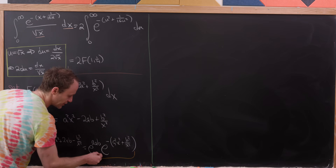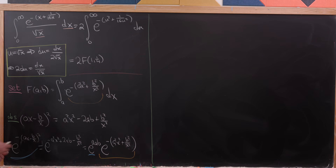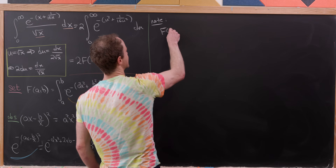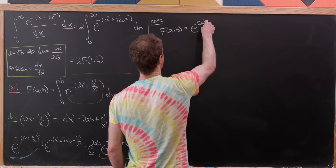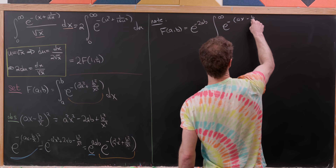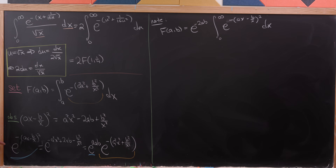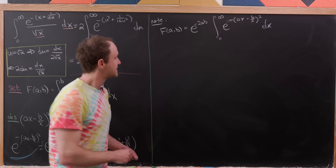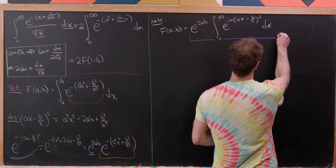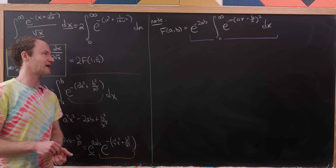That term e to the minus (a squared x squared plus b squared over x squared) is exactly our integrand, and the other factor is just a constant multiple of it. So f(a, b) equals e to the minus 2ab times the integral from 0 to infinity of e to the minus (ax minus b/x) squared dx. We'll hold onto this version and also perform another substitution to manipulate things further.